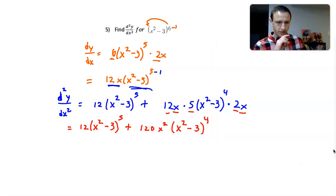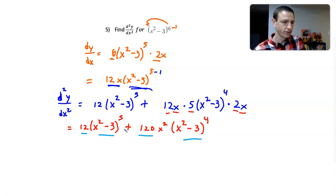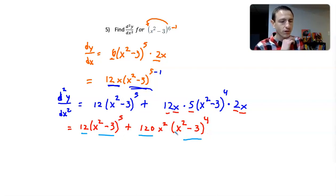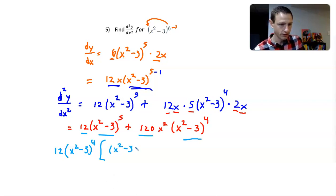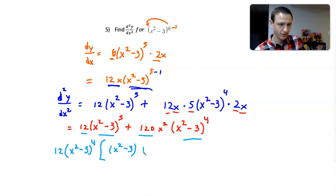Still not quite done, because I have 12 and 120. I can take out 12. I have x squared minus 3 to the 5th and x squared minus 3 to the 4th, so I can take out 4 of them — they both have at least 4. So I take out 12 and x squared minus 3 raised to the 4th. What's left: since I took 4 away from x squared minus 3 to the 5th, I have 1 left — so x squared minus 3. I took 12 out of 120, leaving 10, so plus 10x squared.